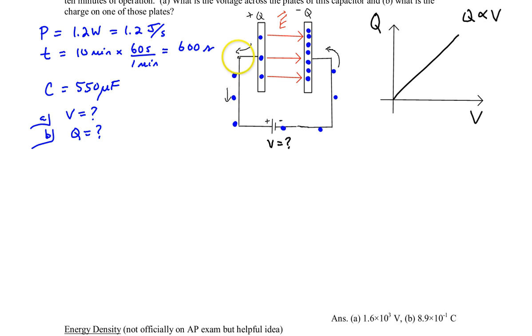The work that's done in moving these electrons from this plate over to this plate is really going to be turned into stored electric potential energy. Very much like a spring when you compress it stores spring potential energy, or if you move a block up a certain height it stores gravitational potential energy. It's the same kind of principle with electrical energy stored in a capacitor.